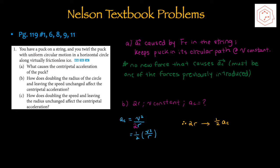Part B asks how doubling the radius of the circle while leaving the speed unchanged affects the centripetal acceleration. Using the equation ac = v² / r, you plug in 2r instead of r. Factoring out v² / r, which equals the original centripetal acceleration, you can determine that the factor is one half. Therefore, doubling the radius means the centripetal acceleration would be halved.